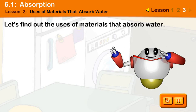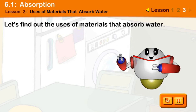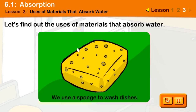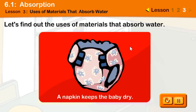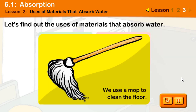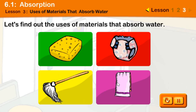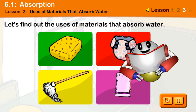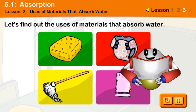Hi children. How do we use materials that absorb water? Let's look at the uses of these materials. We use a sponge to wash dishes. A napkin keeps the baby dry. We use a mop to clean the floor. We use a towel to dry ourselves after a bath. Can you think of other things we can do with materials that absorb water?